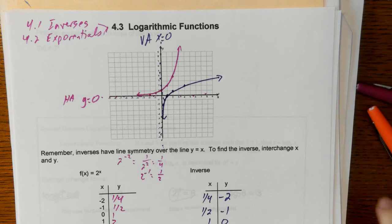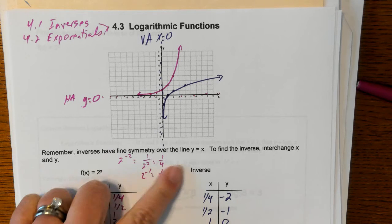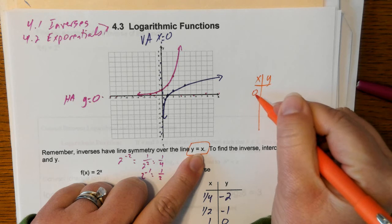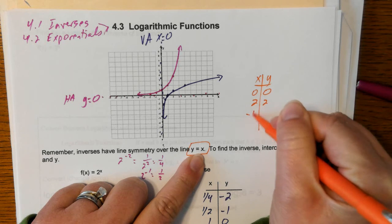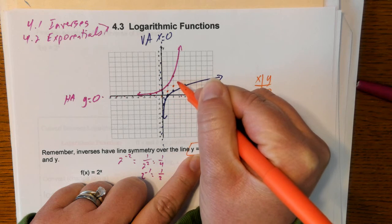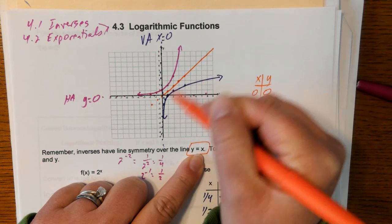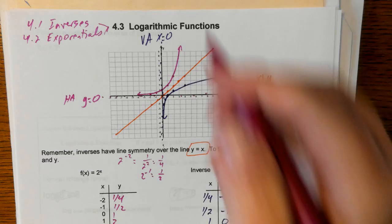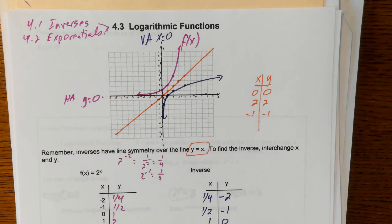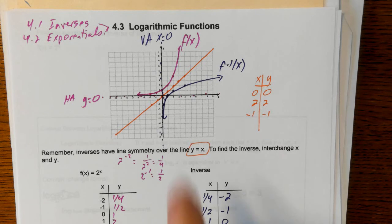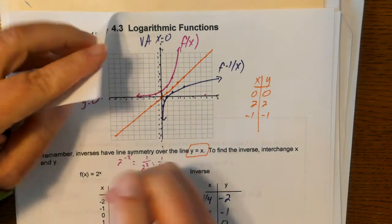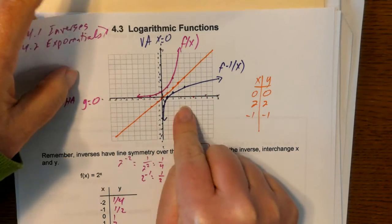One more thing to point out: remember that inverses have a line of symmetry over the line y = x. If I make a table of values for y = x — where no matter what x is, y is the same — points like (0,0), (2,2), (-1,-1) — and connect those dots, I've drawn the line y = x. The original function F(x) and the inverse function F⁻¹(x) — remember that negative 1 means inverse, not a power — are mirror images over the line y = x. If you folded your paper along y = x, these two curves would match up.